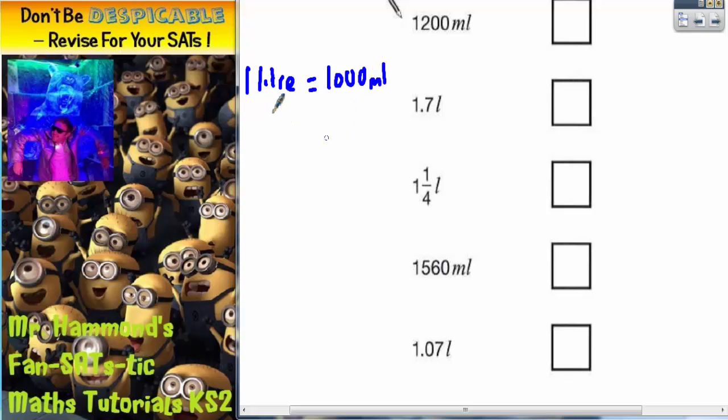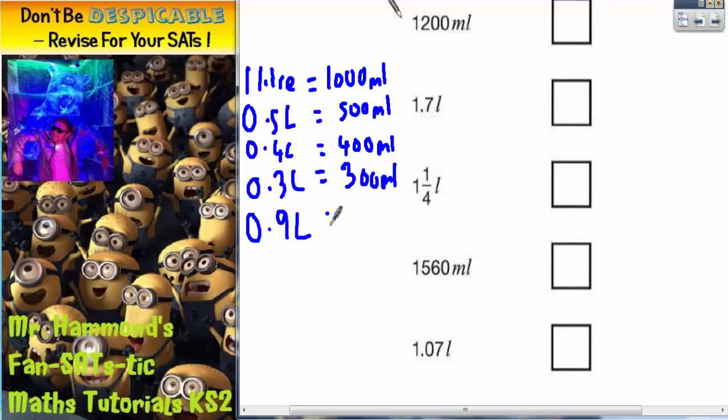And we can work out other facts from that as well. So 0.5 litres is going to be the same as 500 millilitres. That's half. 0.4 would be 400. 0.3 litres would be 300 millilitres. And other decimals as well. So 0.9 litres would be 900 litres. And we can use this to help us in a moment.